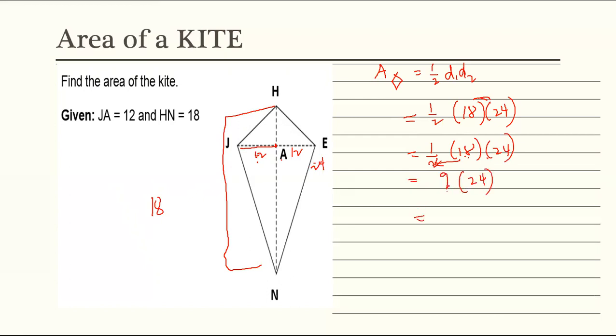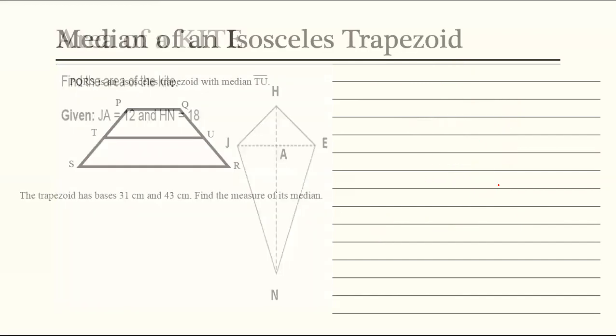Single digit na lang. 9 times 4, 36. Carry 3, 18. Plus 3, 21. So ibig sabihin, area ng kite ay 216 square units. So that's how you get the area of a kite kapag dalawang diago na nabiligay at yung isang kalahati lang.